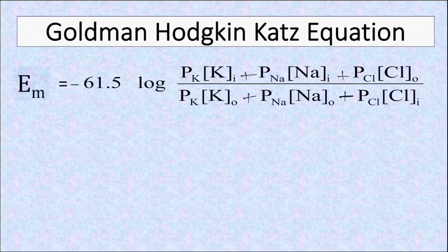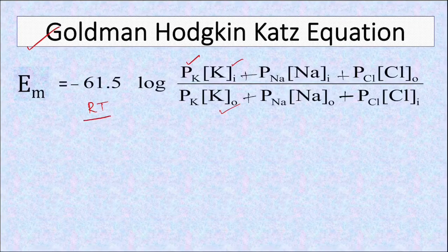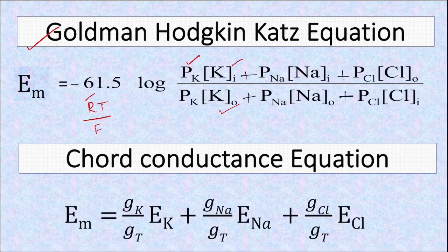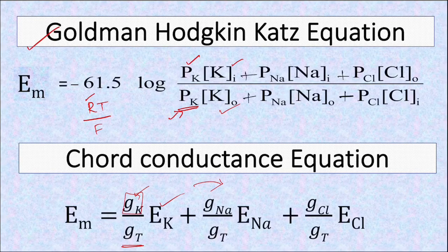There are two different equations to calculate that. The first is the GHK equation, where we need the permeability value of individual ions and their intracellular and extracellular concentrations — this is a simplified version after incorporating the gas constant, body temperature, and Faraday's constant. The other equation is the chord conductance equation, which uses a similar property called conductance of ions, the total conductance, and the known equilibrium potential of individual ions.